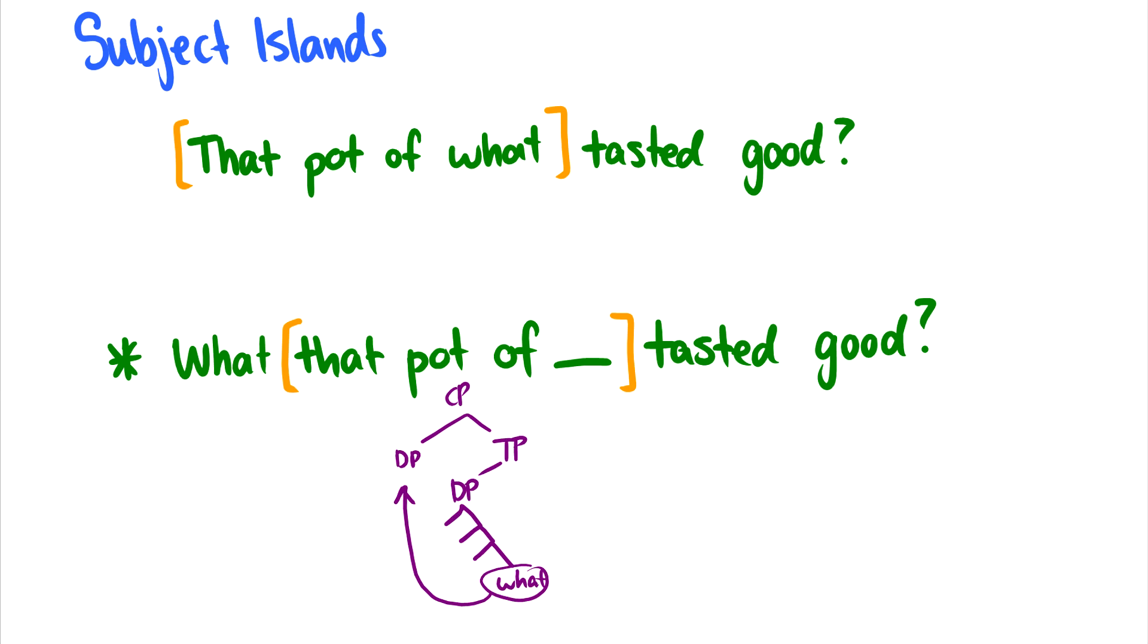So this is creating the ungrammaticality. This is a subject island. All right, so those are subject islands. I know I'm touching on these very quickly, but I'm just trying to give you a general overview of what these islands are, how they're constructed, and just a quick explanation of why this doesn't work.